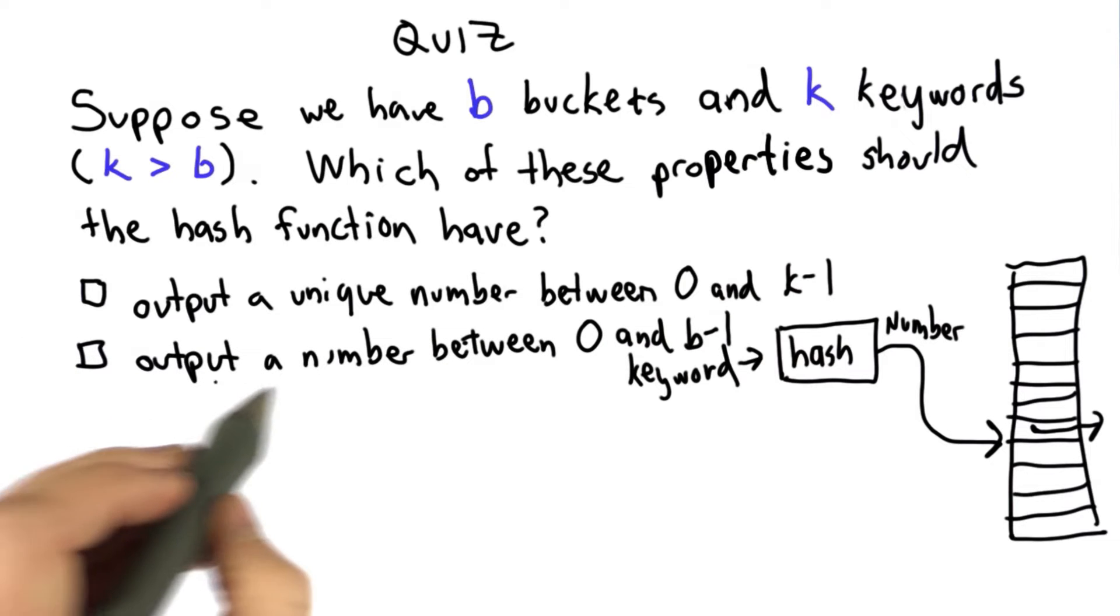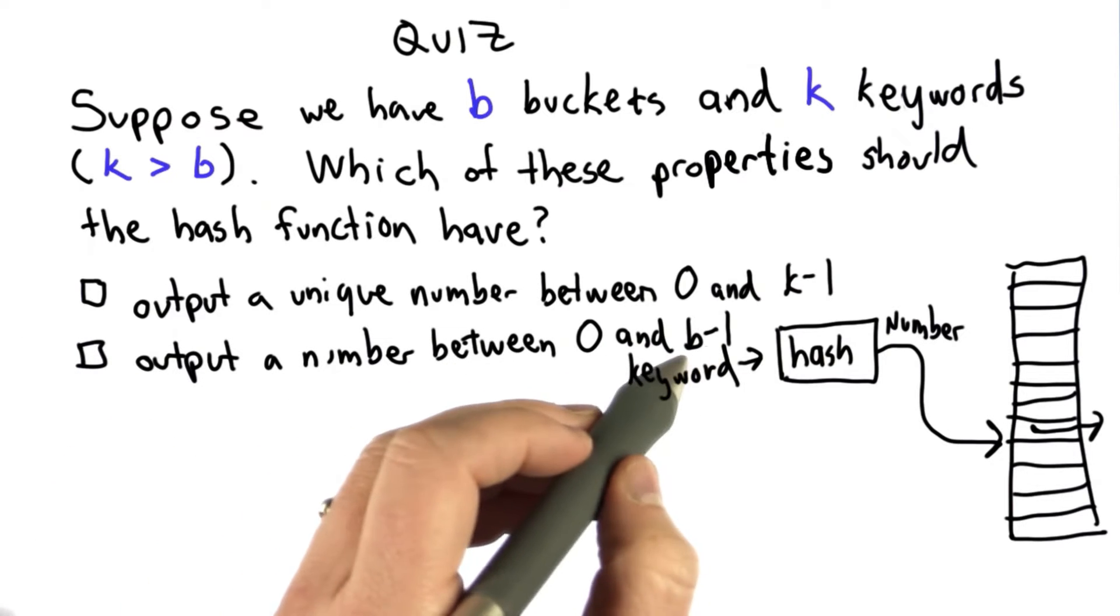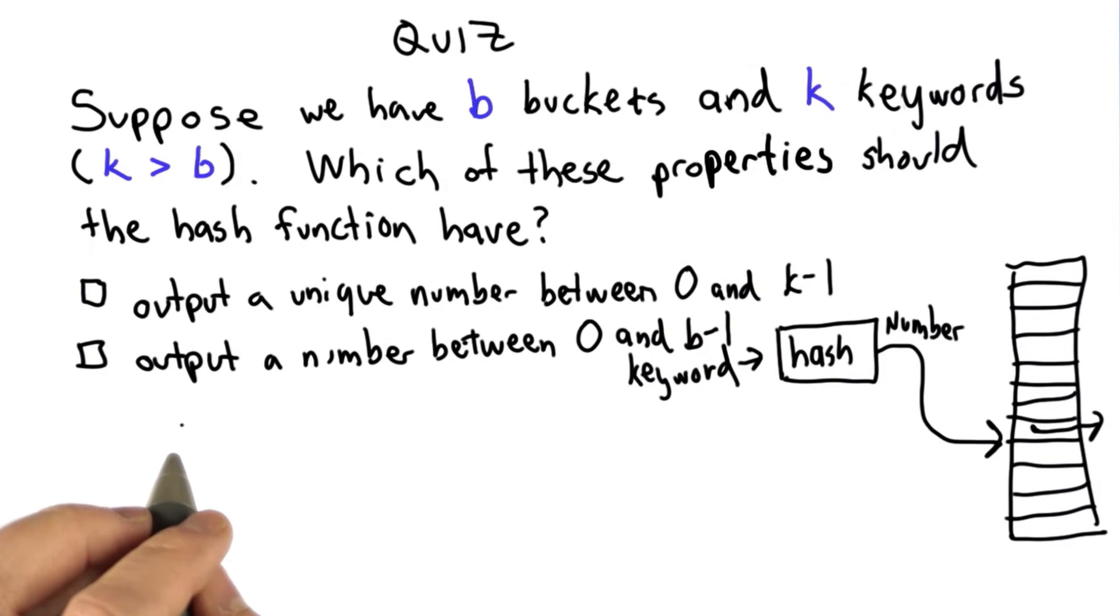The second choice is output a number between 0 and b-1, the number of buckets that we have.